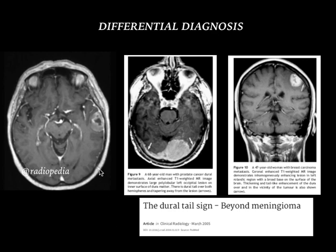Here is the first case taken from Radiopaedia, which is an intra-axial lesion showing heterogeneous enhancement with a central necrotic area and adjacent dural thickening with enhancement. This was a proven case of IDH wild-type glioblastoma.